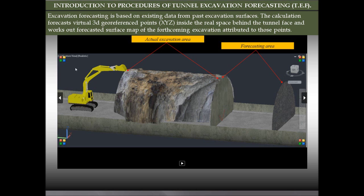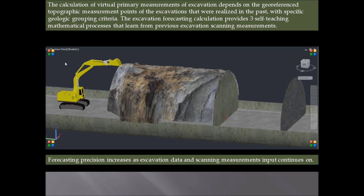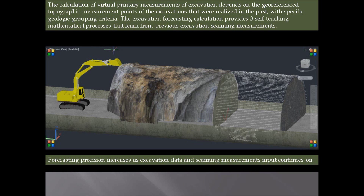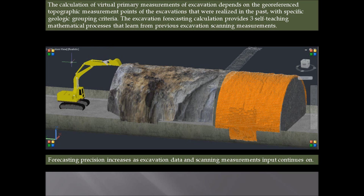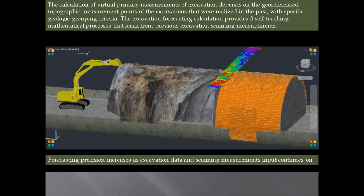We introduce the procedures of tunnel excavation forecasting. Excavation forecasting is based on existing data from past excavation surfaces. The calculation forecasts virtual 3D georeferenced points inside the real space behind the tunnel face and works out a forecasted surface map on the forthcoming excavation attributed to those points. Forecasting precision increases as excavation data and scanning measurement inputs continue.